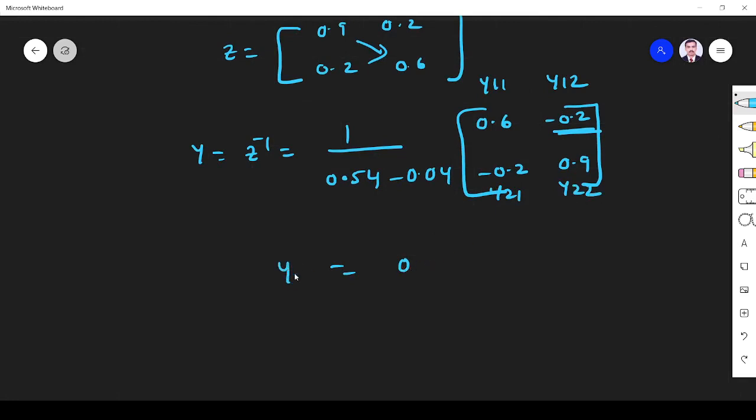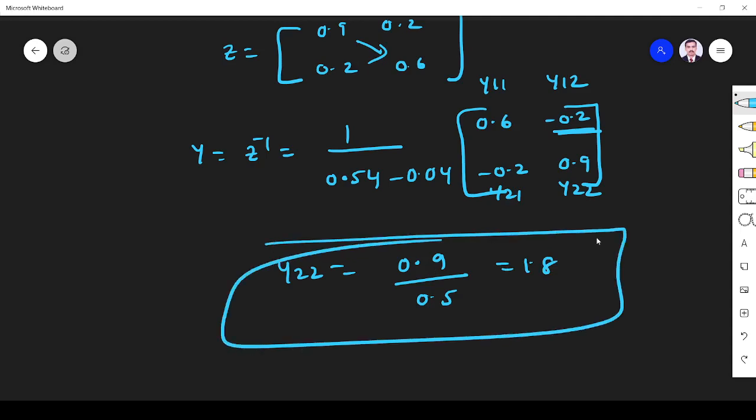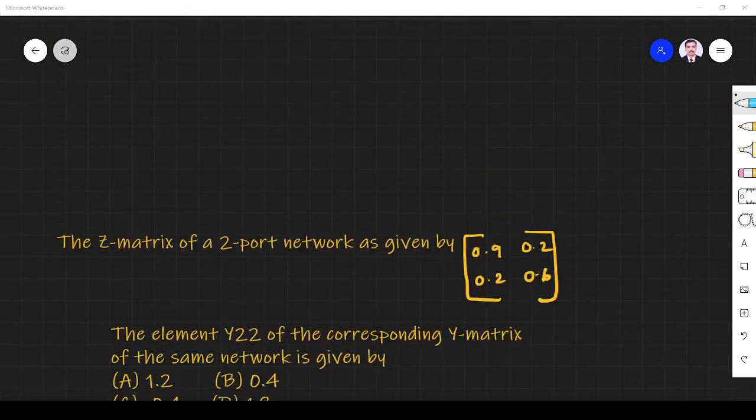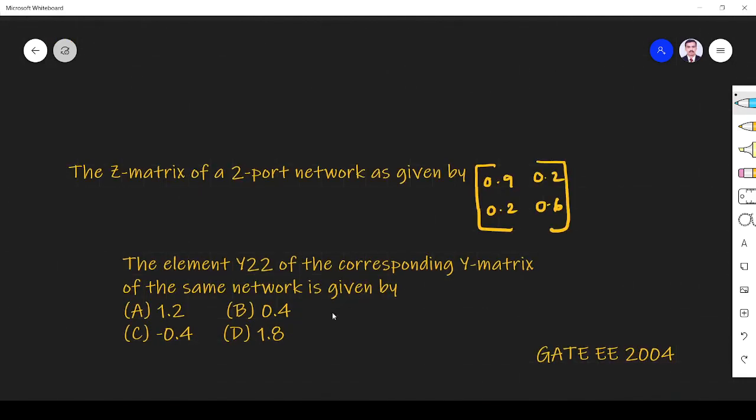So Y22 is 0.9 divided by 0.54 minus 0.04. It is 0.5. That is 1.8. So the answer is 1.8, right? So option D is the right answer. Thank you.